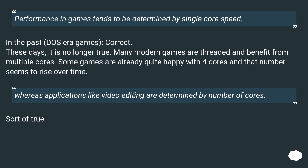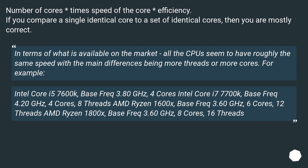Whereas applications like video editing are determined by number of cores — sort of true. It's really number of cores times speed of the core times efficiency. If you compare a single identical core to a set of identical cores, then you are mostly correct. In terms of what is available on the market, all the cores seem to have roughly the same speed with the main differences being more threads or more cores.